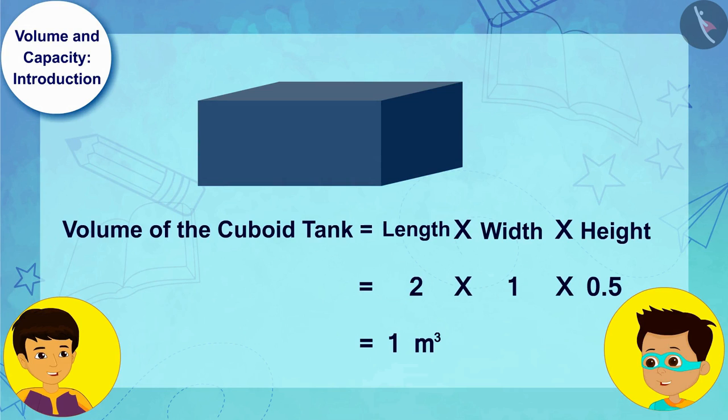On solving in this way, we can see that the volume of the cuboid tank is 1 cubic meter. Absolutely right!